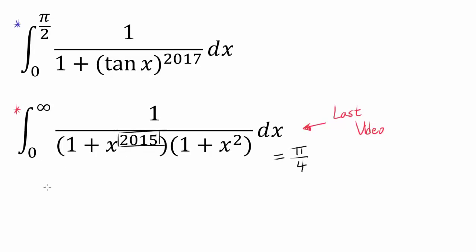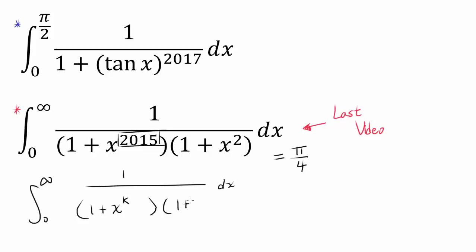In fact, it can be anything. Let me just rewrite this entire expression: the integral of 1 over (1 + x^k) times (1 + x²) dx. Instead of having 2015, we can have 2015π, or 2016, or 2017 — we can have anything. But we should always get the same value of π/4.